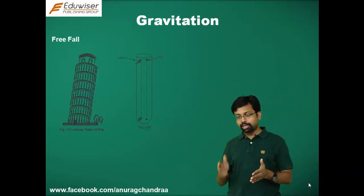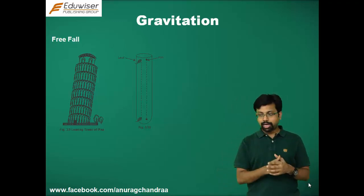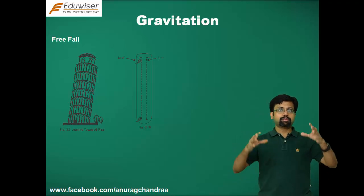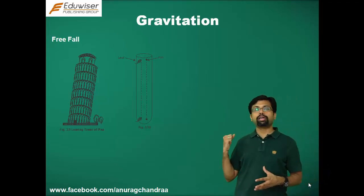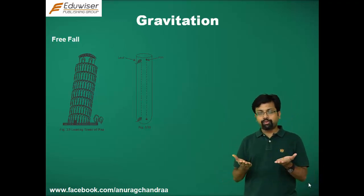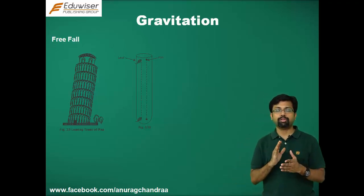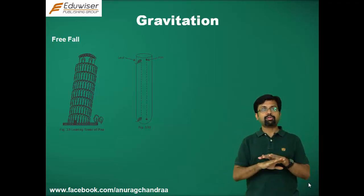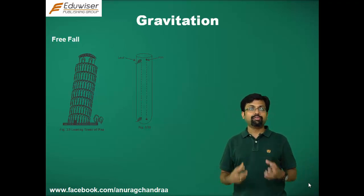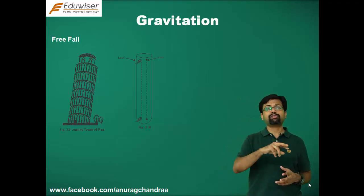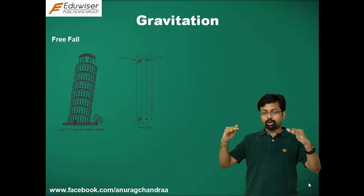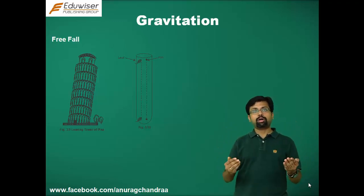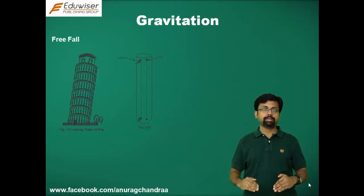Once Galileo performed this experiment, Robert Boyle took the idea further. He took a feather and an iron pellet, placed them in a long tube, removed all the air from the tube, and let both fall together. They took exactly the same time to reach the bottom of the tube. This strengthened Galileo's conclusion: in the absence of any force other than gravity, acceleration is the same for any body regardless of its mass.